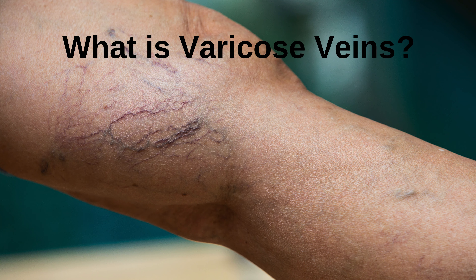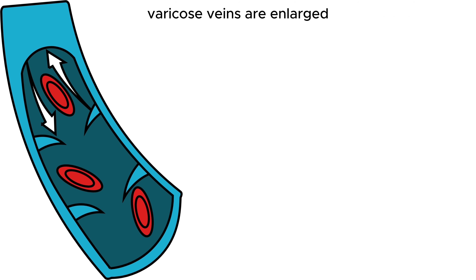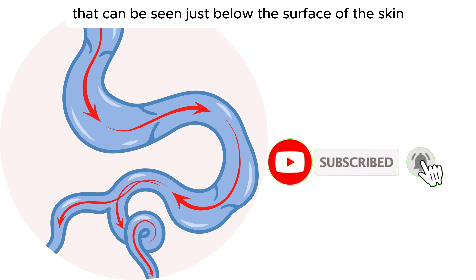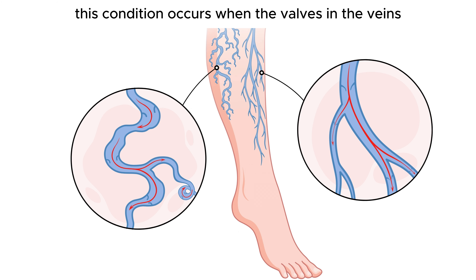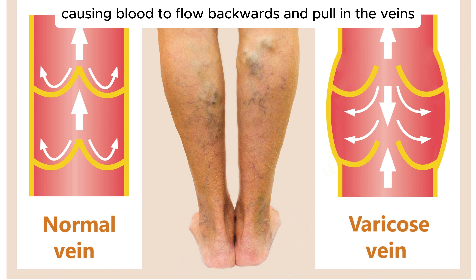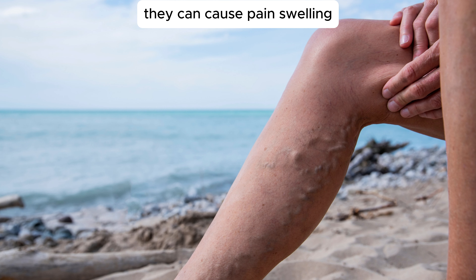What are varicose veins? First, it is important to understand what varicose veins are. Varicose veins are enlarged, twisted veins that can be seen just below the surface of the skin, typically in the legs. This condition occurs when the valves in the veins malfunction, causing blood to flow backwards and pool in the veins. Varicose veins are more than a cosmetic problem — they can cause pain, swelling, and even serious health problems.